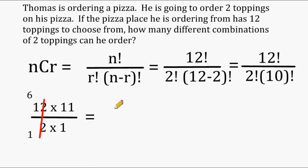Now, at this point, for the numerator, we have a 6 and an 11 remaining, and 6 times 11 is 66. And for the denominator, we have 1 times 1, which is 1. And when we simplify that, that would give us 66. So we have determined that there are 66 ways that we can combine 2 toppings if you have 12 toppings to select from.